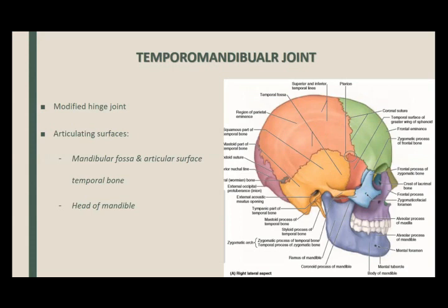The temporomandibular joint, we said it was a modified type of hinge joint — a synovial joint variety and modified hinge joint. This is the temporal mandibular joint. It is formed between the mandibular fossa, which lies in the temporal bone — this orange thing is the temporal bone — and the head of the mandible. The head of the mandible and the mandibular fossa in the temporal bone contribute to the formation of the temporomandibular joint.